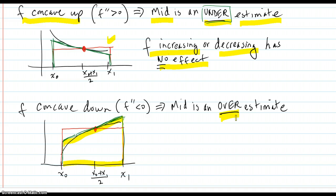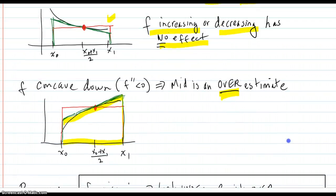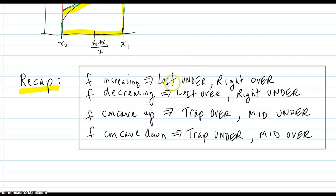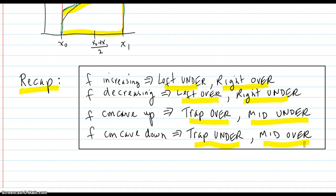Here's a recap of all the methods and their over/underestimate analysis. If F is increasing, the left is under and the right is over. If F is decreasing, the left is over and the right is under. If F is concave up, the trapezoid is over and the midpoint is under. If F is concave down, the trapezoid is under and the midpoint is over. You can just draw quick pictures as shown — if you forget these rules, just draw a quick picture and see.